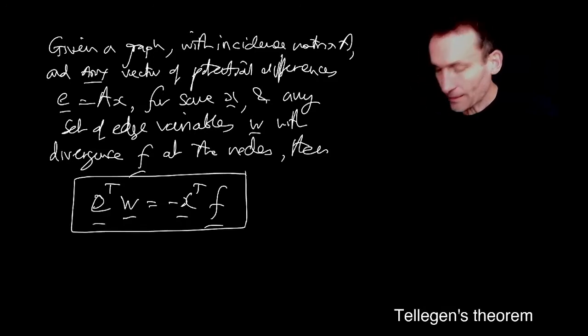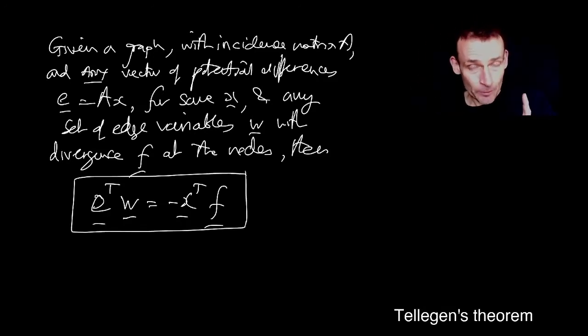Then E transpose w is equal to minus x transpose f. Look at that. That's quite a surprising statement if you think about it. It says that two kinds of dot products are the same. But think about it. The left-hand side is a dot product of two m-dimensional vectors, while the right-hand side is the dot product of two n-dimensional vectors.